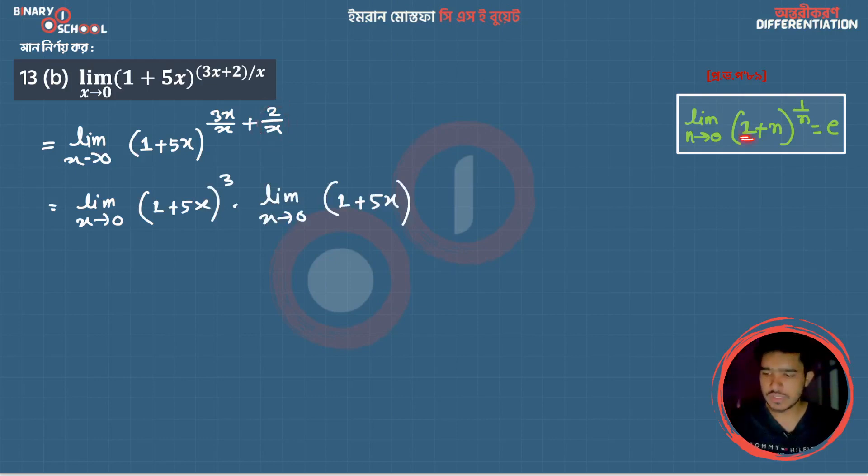So we can write 1 by 5x. One to the power 2 by x - I'm going to apply the key formula. The important thing is the 2 by x part. When I substitute, one plus five into zero...